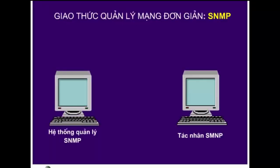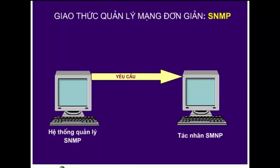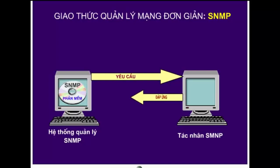Chức năng cơ bản của một hệ thống quản lý là yêu cầu thông tin từ tác nhân. Về nguyên tắc, mọi máy tính chạy phần mềm quản lý SNMP đều có thể được sử dụng là một hệ thống quản lý. Nhiệm vụ của tác nhân là thực hiện các hoạt động do hệ thống quản lý yêu cầu.